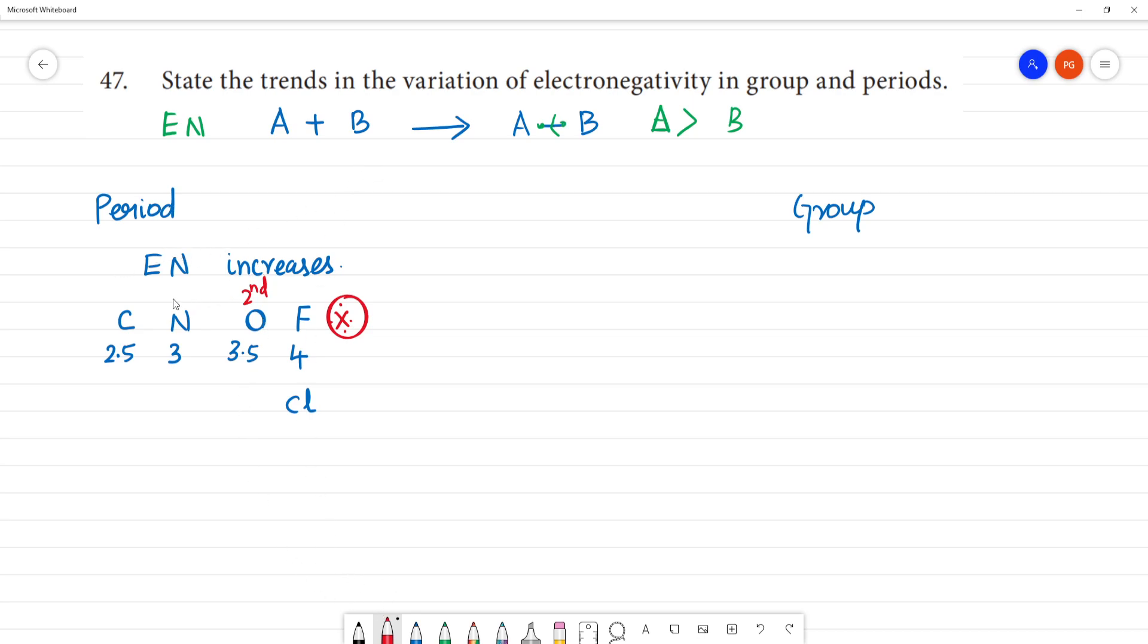Along a period, electronegativity value increases. What is the reason? First reason: atomic size. Atomic size decreases.